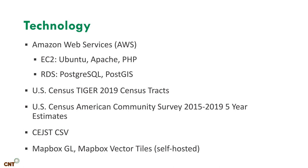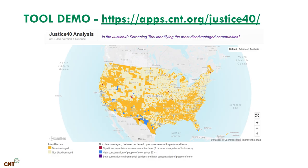The other technology we use for our web mapping tools is Mapbox and Mapbox GL. We use Mapbox as our front end, but we don't pay Mapbox to store data — we host our own Mapbox vector tiles generated from our code and PostGIS data. The URL for our tool is apps.cnt.org/justice40.